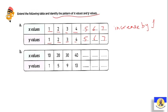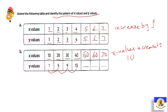اللي بعده: الـ x values — 10، 20، 30، 40 — يبقى اللي بعدها 50، وبعدين 60، وبعدين 70. ده معناه إن الـ x values increase by 10. طيب الـ y values: 1 يصبح 5، بعدين 5 يصبح 9، بعدين 9 يصبح 13. كل مرة بتزود 4: 1+4=5، 5+4=9، 9+4=13، 13+4=17، 17+4=21، 21+4=25. يعني الـ y values increase by 4.